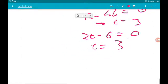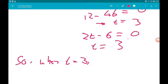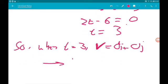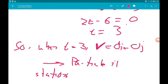So when t is 3, velocity is 0 i plus 0 j, which means the particle is stationary at t equals 3.